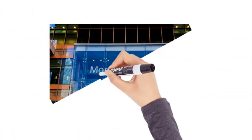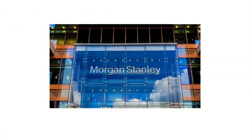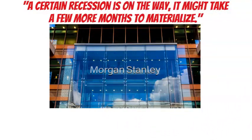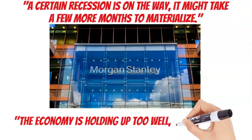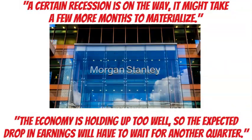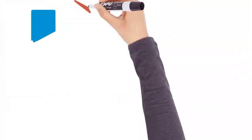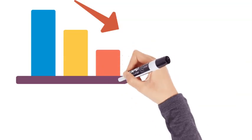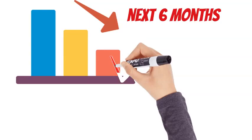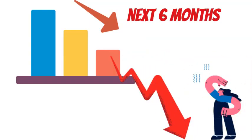In its outlooks, Morgan Stanley states that while they are certain a recession is on the way, it might take a few more months to materialize. The economy is holding up too well, so the expected drop in earnings will have to wait for another quarter. They anticipate a decline in corporate earnings in 2023, but not a complete collapse, as that will probably occur during the next six months. This, however, will exacerbate the crash when it happens.